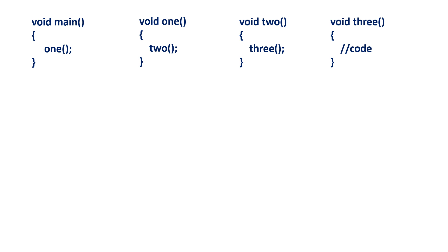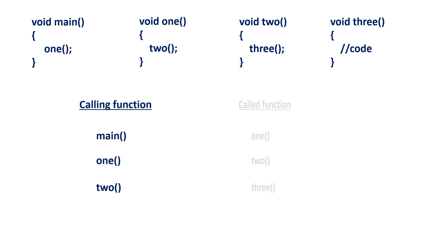Let's see another example. Here we have four functions: main function, one function, two function, and three function. Main function is calling one, one function is calling two, two function is calling three, and three function contains some code. Now we see what are calling functions and called functions in this example.